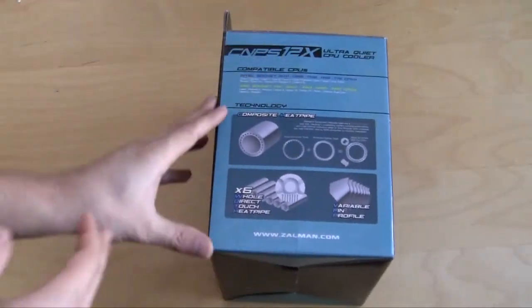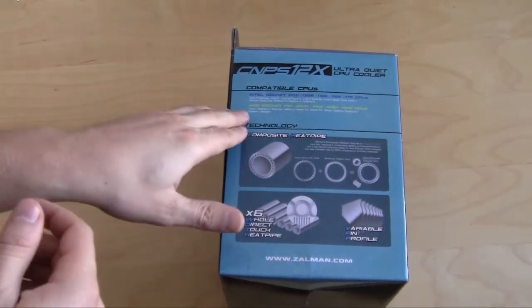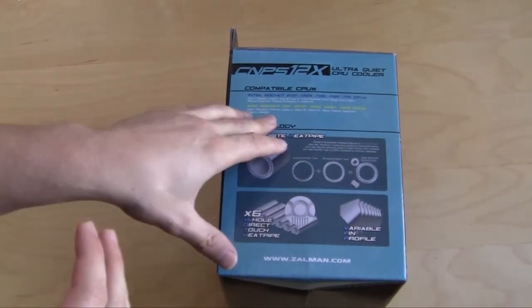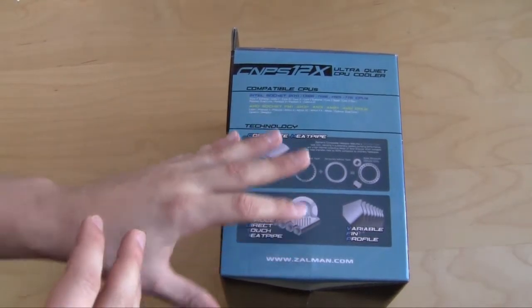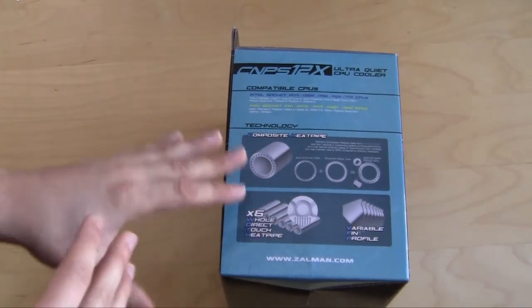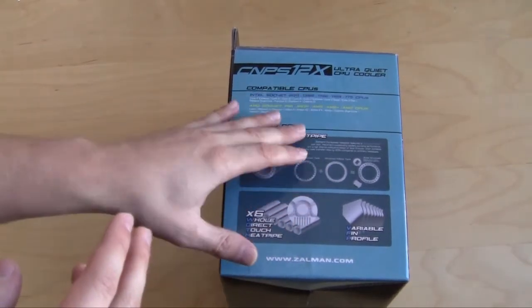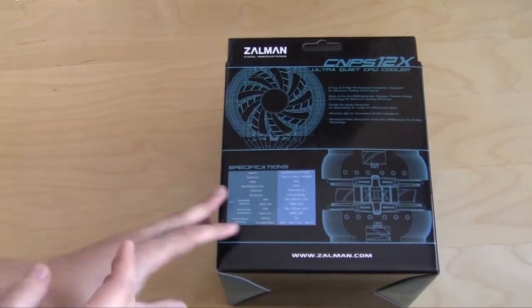On the side here gives you information about the heat pipe technology being used and it lists all the sockets. I'm not gonna go over everything, but basically this CPU cooler will work with pretty much any processor that's been out in the past three years and everything that's new. Intel's X79 chipset, everything—this will fit everything.